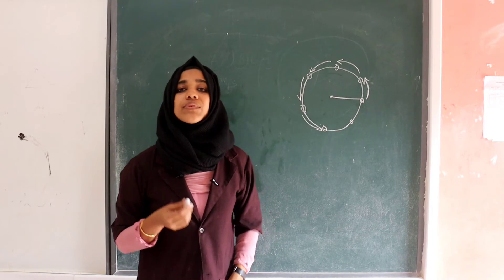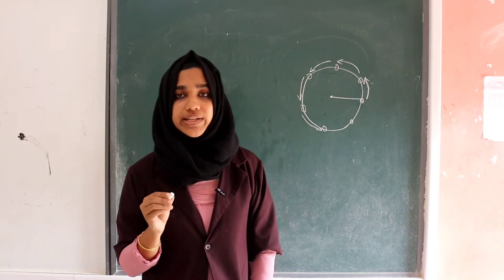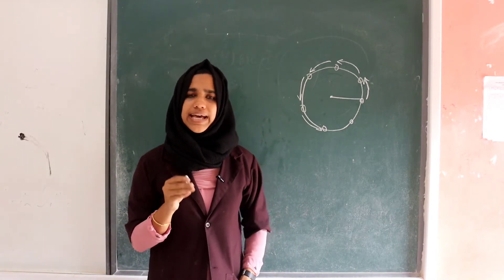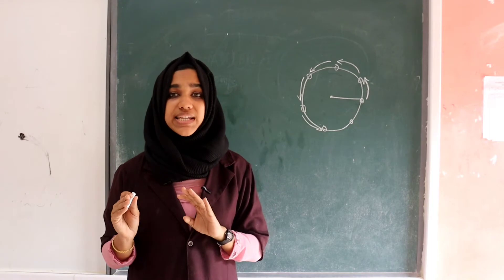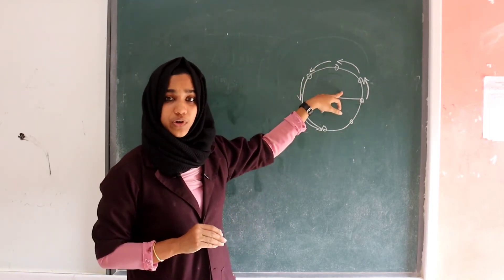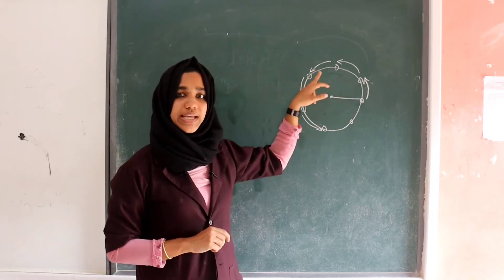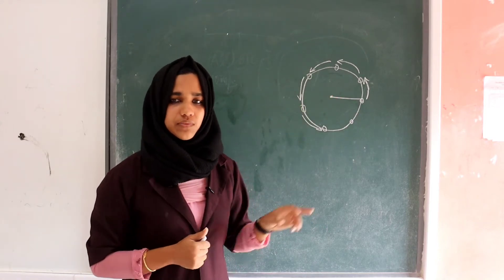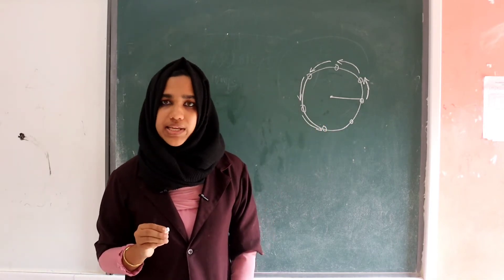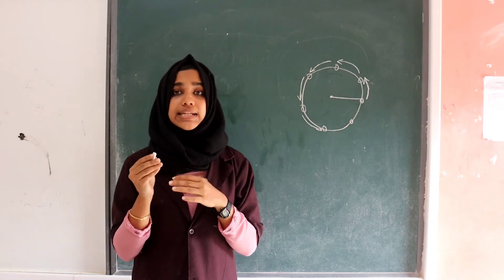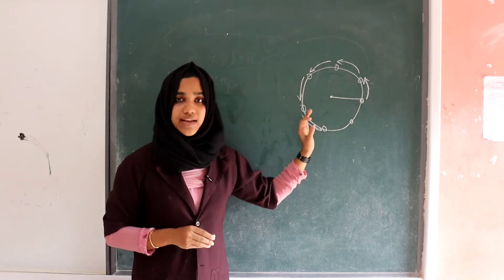Velocity is a vector quantity, meaning it has both magnitude and direction. The object moves with uniform speed, so there is no change in magnitude. But the direction is changing, so velocity changes. When velocity changes, acceleration takes place. Therefore, the object has acceleration.